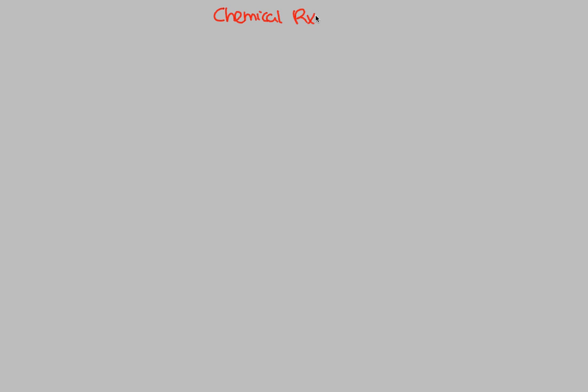Now that we've established the basics behind chemical reactions, we can continue our discussion by entitling this next flowchart Chemical Reactions 2. In this flowchart, we're going to be labeling two very basic ideas that are central and absolutely essential to understanding metabolism, because they are processes and reactions that are going to occur throughout life. These two things are called exergonic reactions and its opposite, endergonic reactions.